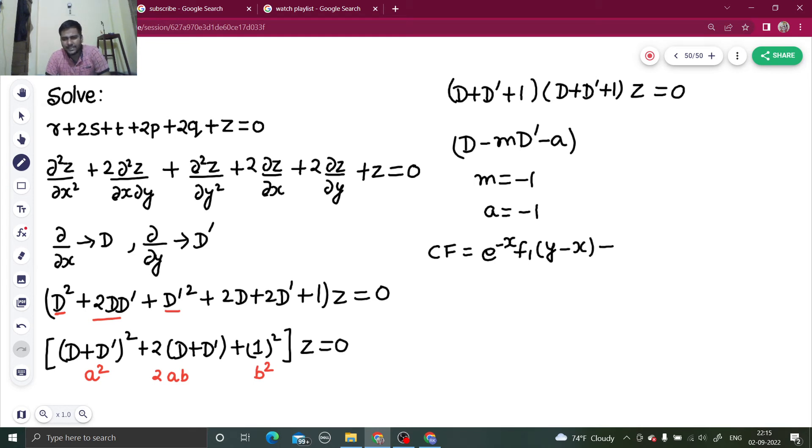Because they are repeating, in the second I will multiply by x. Again e power ax, so e power minus x, times f2 of y minus x, because they are repeating. In this case, since RHS is zero, my particular integral will be zero. So finally I will write z as CF plus PI.